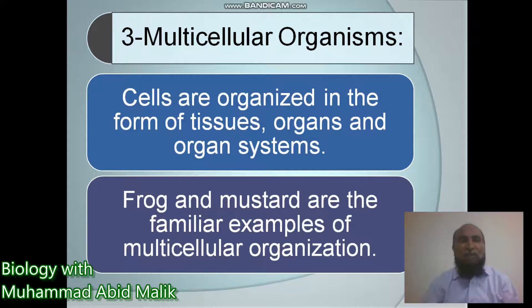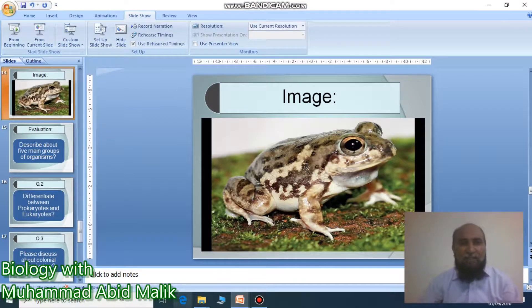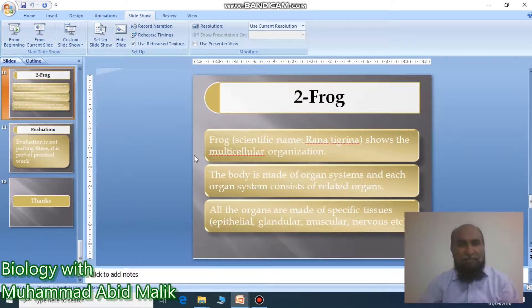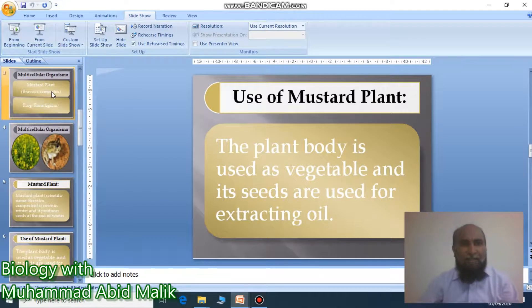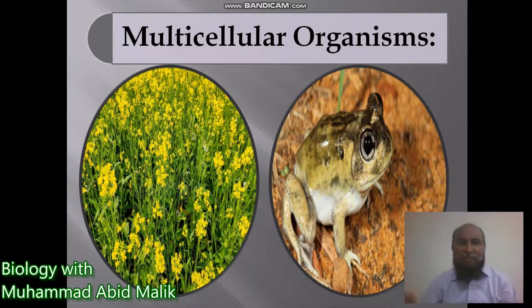In multicellular organisms, cells are organized in the form of tissues, organs, and organ systems. Frog and mustard plant are familiar examples of multicellular organization. The images shown here illustrate the mustard plant and the frog as multicellular organisms.